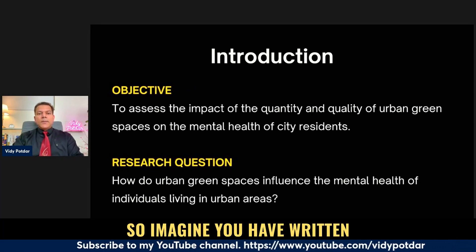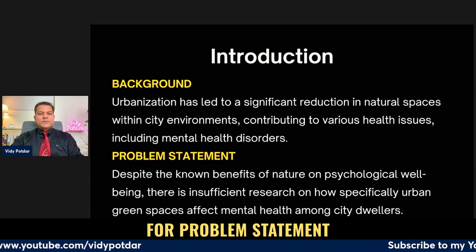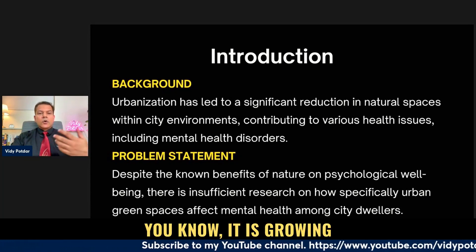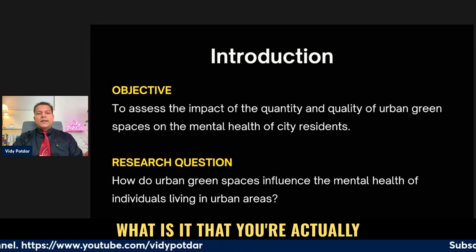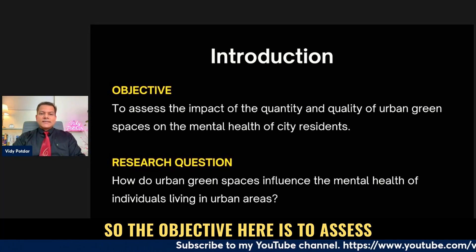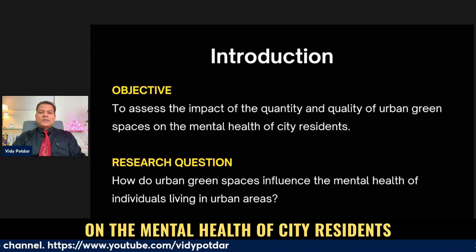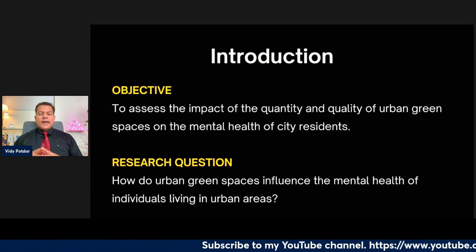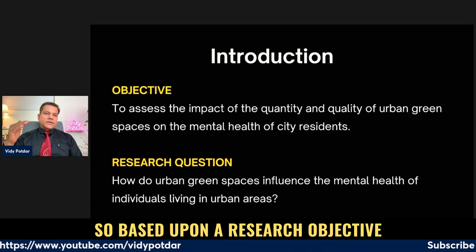Next, we come to the objective. Imagine you have written five or six sentences for background and three or four for the problem statement — your research proposal is starting to build up. Then you come to the objective, where you state exactly what you're going to do. Here, the objective is to assess the impact of the quality and quantity of urban green spaces on the mental health of city residents — quantity meaning how many, and quality being the other dimension to investigate.